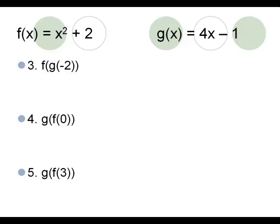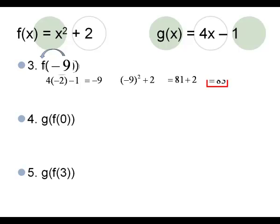When you are evaluating a number in a composition, we start with the innermost right part of the problem. On number 3, that means we're going to evaluate g of negative 2 — replacing negative 2 as x into George's equation. 4 times negative 2 minus 1 would be negative 9. Now you take that answer, negative 9, and replace it into Frank's equation. Negative 9 squared would be 81, plus 2 is 83 for a final answer.